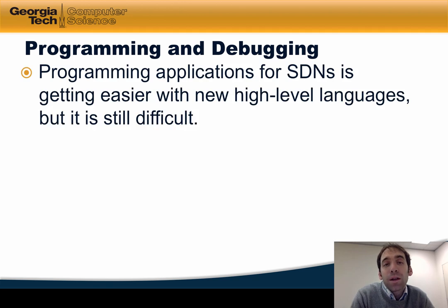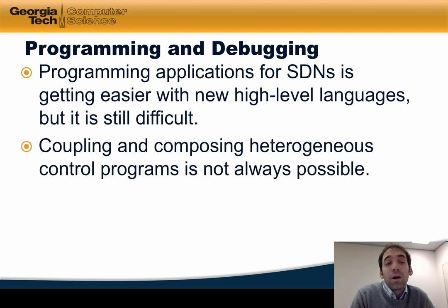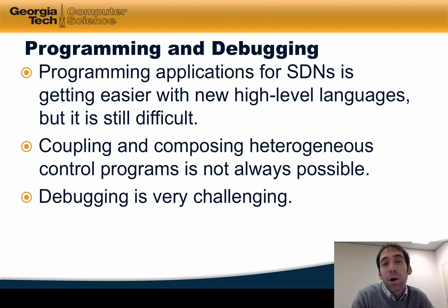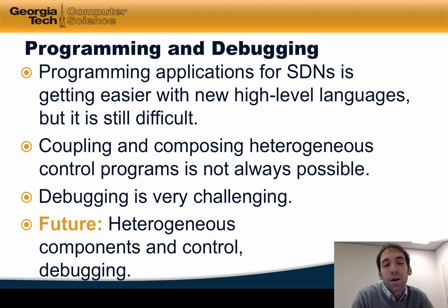Programming and debugging is another area where there are many open problems. Programming applications for SDNs is getting easier with some of the new high-level languages that we explored, but it is still arguably very difficult. Coupling and composing heterogeneous control programs is not always possible, and debugging remains a huge challenge. In the future, these high-level programming languages could provide support for heterogeneous components and control, as well as better support for debugging.